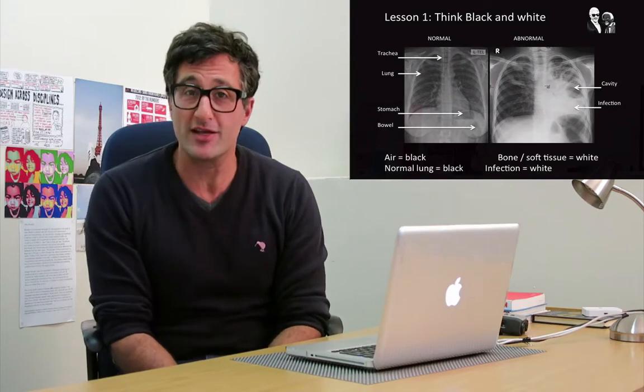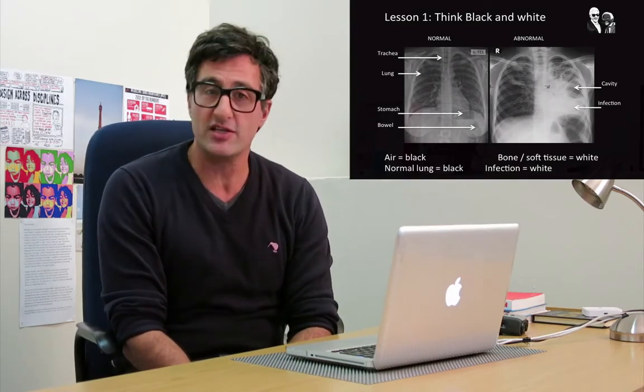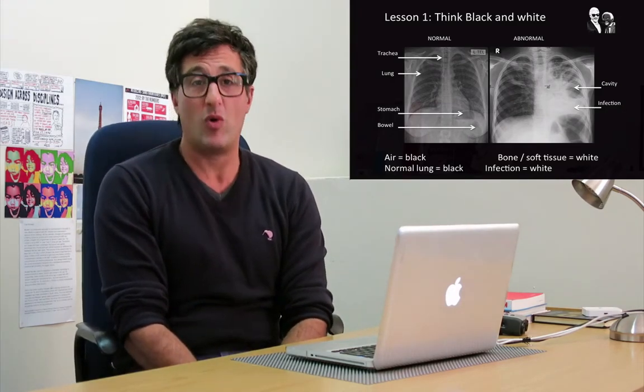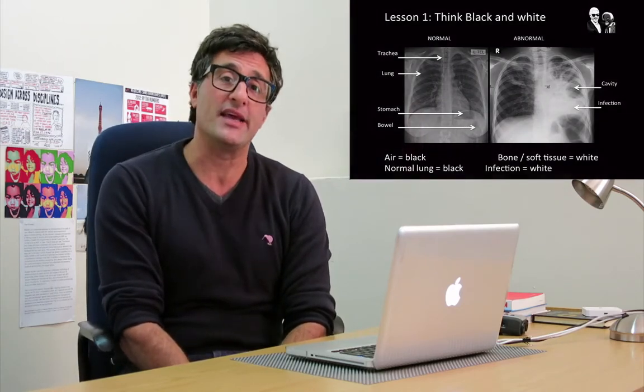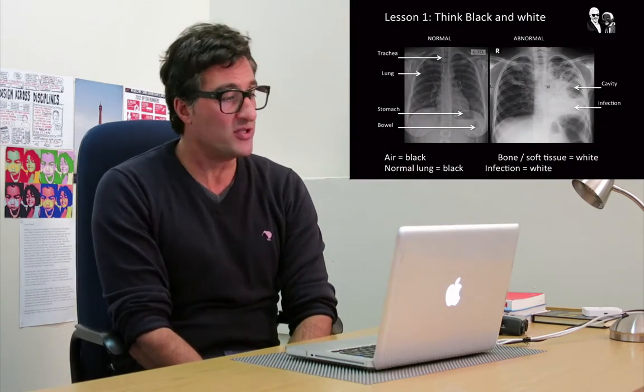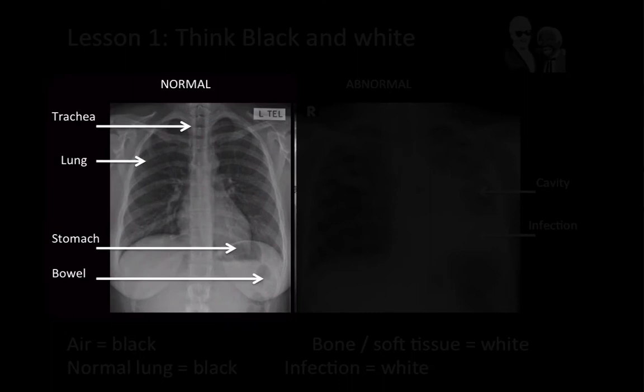The first lesson is that x-rays are just black and white. If you stop thinking about the shades in between, you can start realizing that the majority of structures are white and anything containing air is black. On the left I've put a normal chest x-ray of an adult. You can see the trachea, which contains air, the lung, the stomach, and bowel below the diaphragm — all contain air and are therefore black.